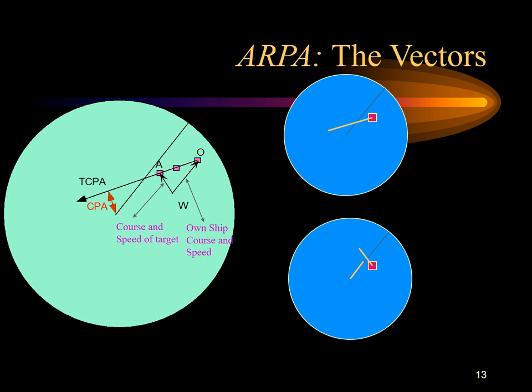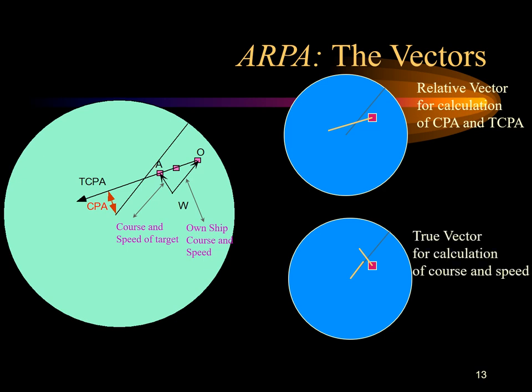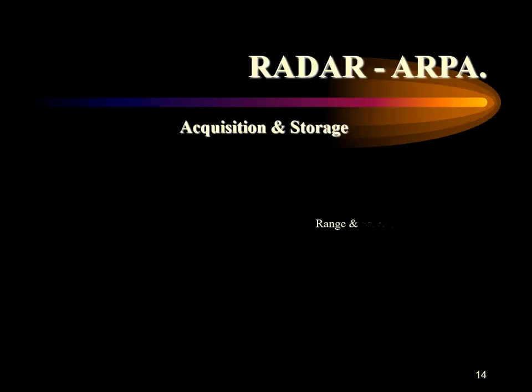Vectors are a requirement of the performance standards and provide a graphical reference for the operator to determine risk of collision and traffic flow. With a true vector presentation, OwnShip also has a vector. CPA and TCPA information is available from the relative vector, and course and speed from the true vector. Relative vectors are good for collision avoidance and least affected by course and speed input errors, while true vectors give a good indication of traffic flow around OwnShip.